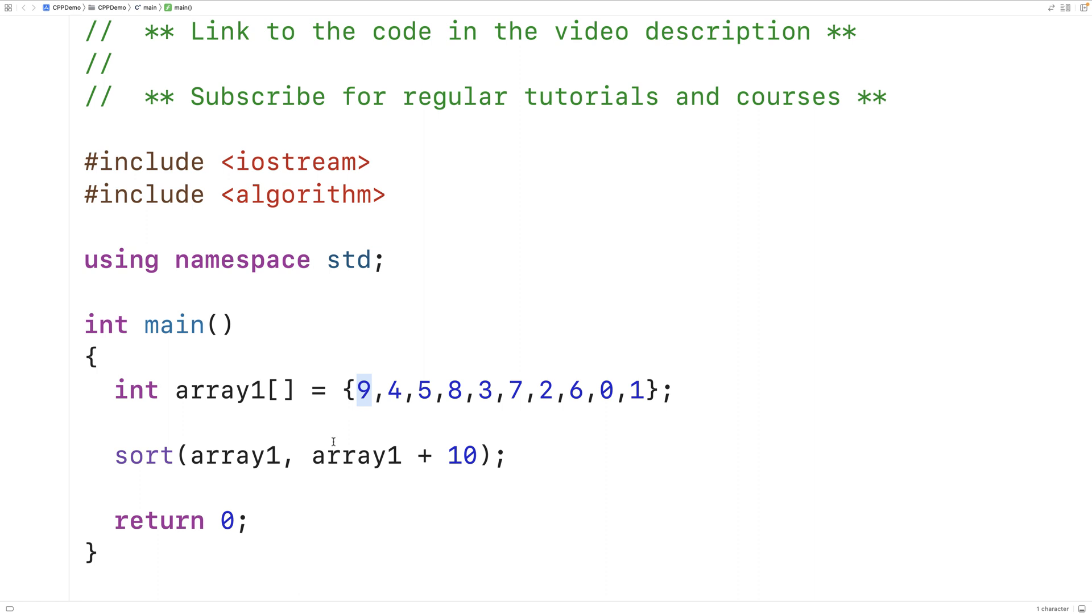Then as a second argument, we use pointer arithmetic. Pointer arithmetic allows us to operate on pointer values. So because our array is length 10, when we add 10 to the array1 pointer, we're getting the memory address where we want to stop sorting. And we pass that in as an argument.